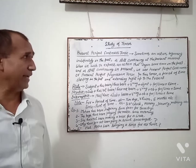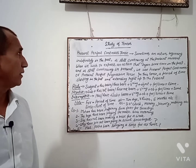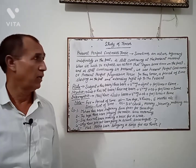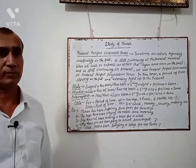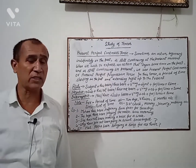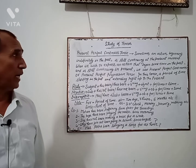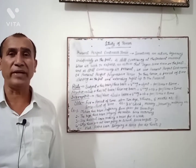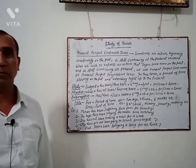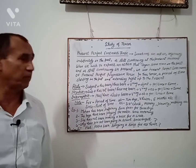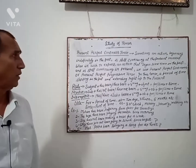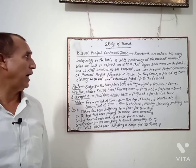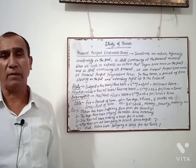Sometimes an action beginning indefinitely in the past is still continuing at the present moment. When we wish to express an action that began sometime in the past and is still continuing in the present, we use Present Perfect Continuous Tense or Present Perfect Progressive Tense. In this tense, a period of time starts in the past and extends right up to the present.